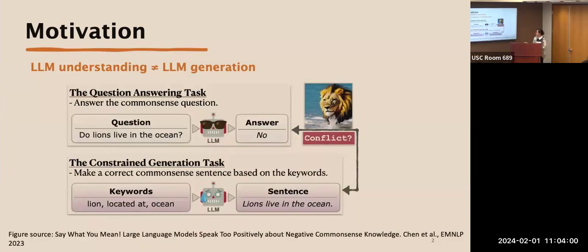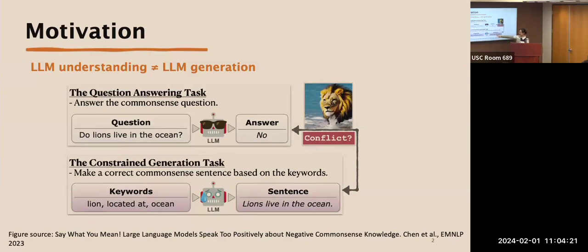In a question answering task, if we ask whether lions live in the ocean, GPT-3 answers no, which is correct. But in a constraint generation task, if we ask it to generate a sentence including 'lion,' 'located at,' and 'ocean,' it still generates 'lions live in the ocean' — which is contradictory. This motivates us to look into how well we can leverage the language model's own knowledge to improve itself, without relying on human labels.